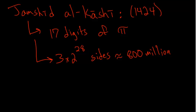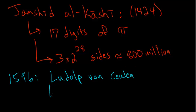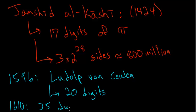After Jamshid, we have the Dutch mathematician Ludolf von Ceulen, who in the year 1596 found pi to 20 digits. By the time of his death in 1610, he was able to increase this to 35 digits of pi.